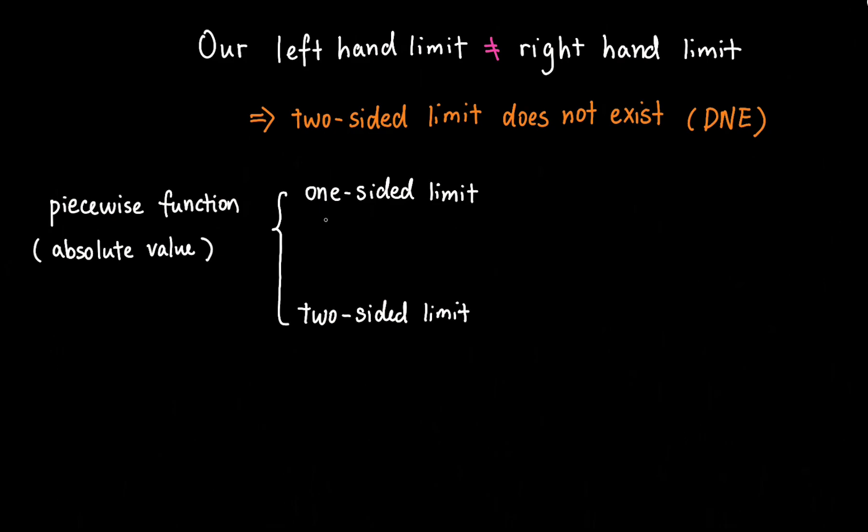So one-sided limit is often x goes to a value with a superscript on top, a plus or minus indicating the direction. For two-sided limit, there is no positive or negative sign on top of the number.